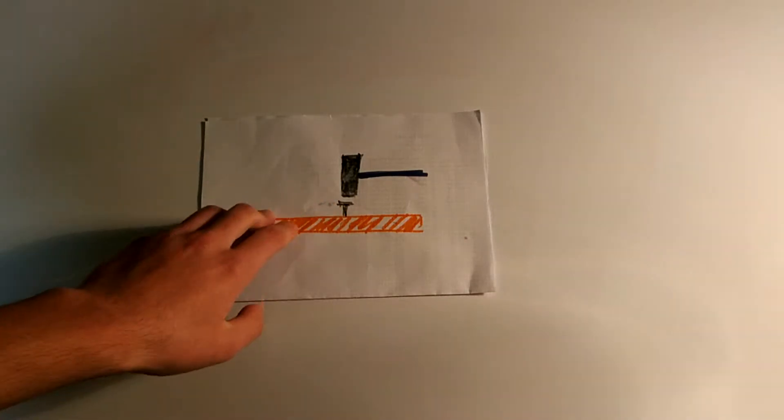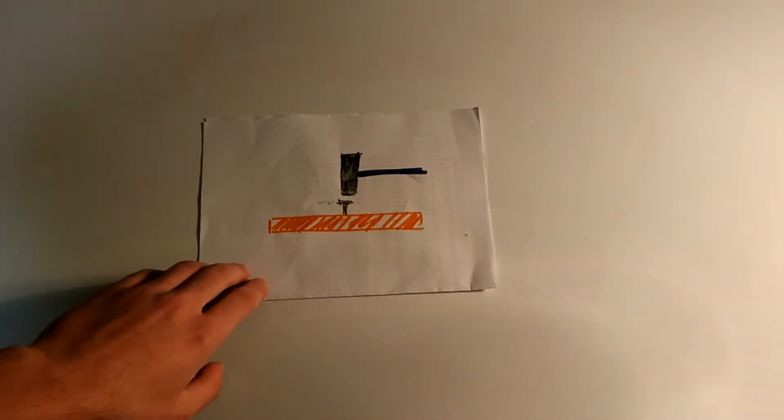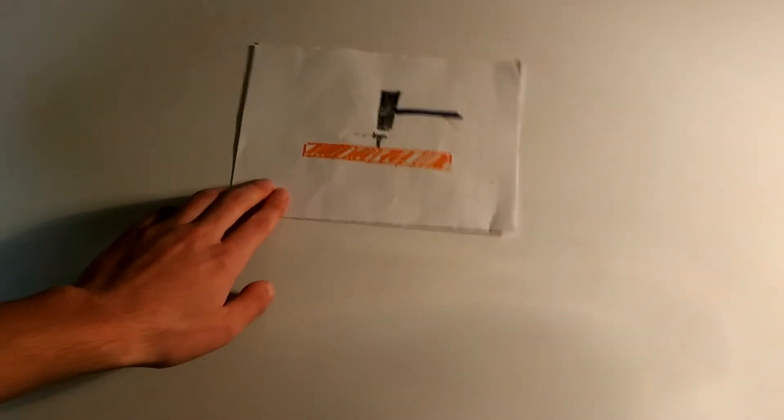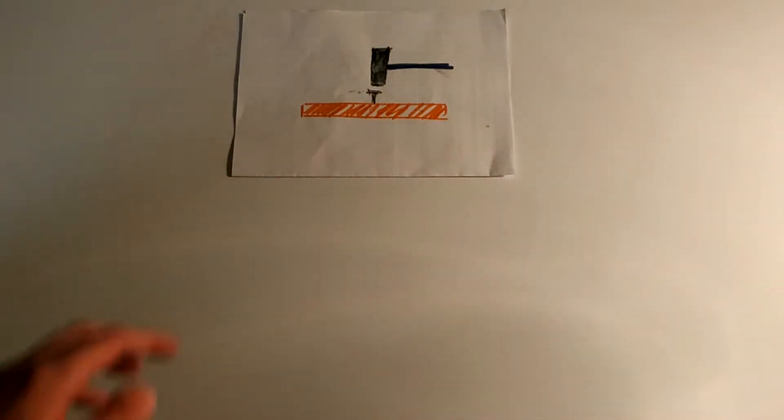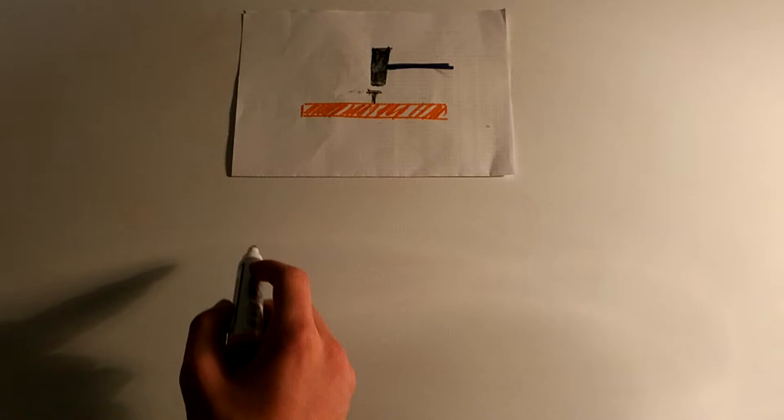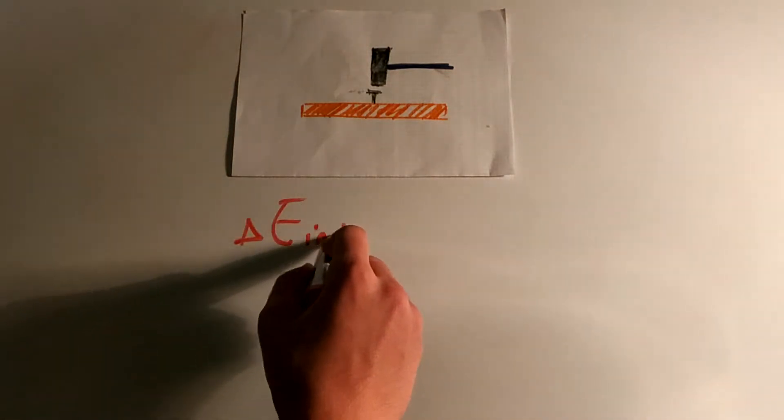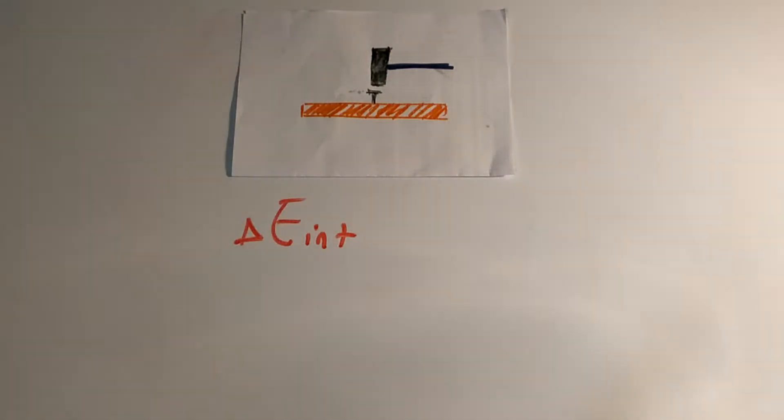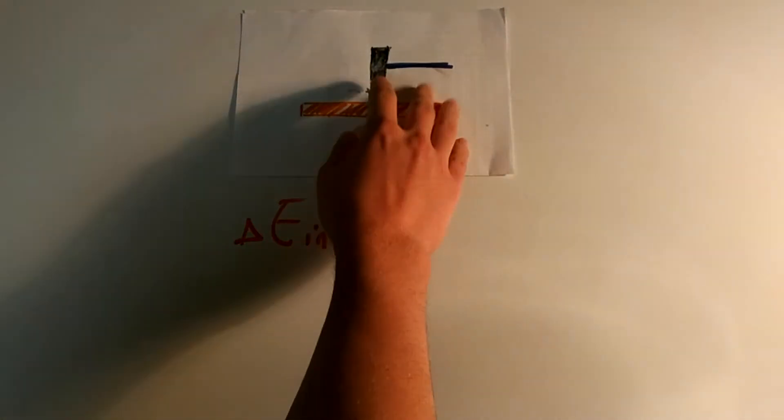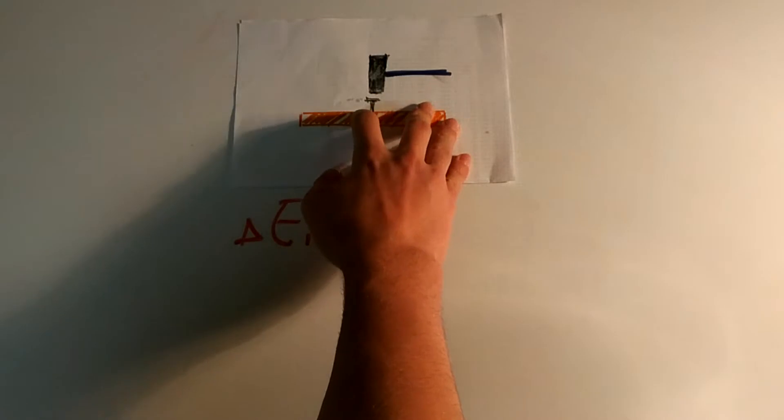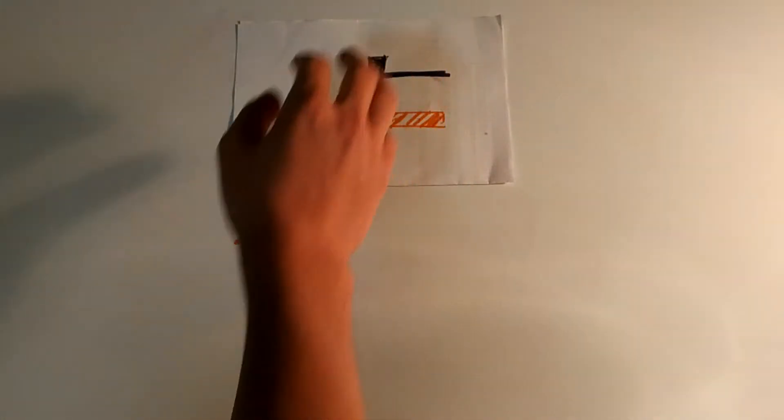We take the nail and this piece of wood as a non-isolated system. Also energy is dissipated through some waves. So we can say that there is a change in the internal energy of this system, since the internal energy of the wood and the nail increases.